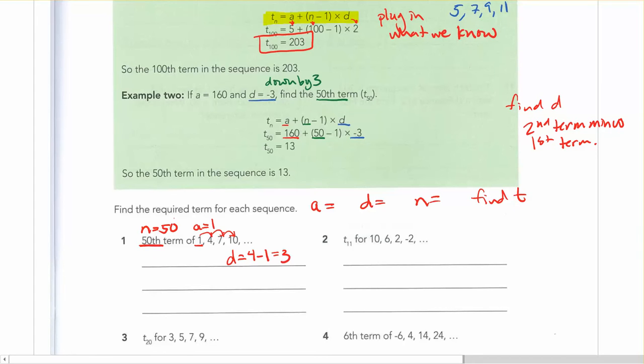So now that we've got that, the numbers that we need, the a, the n, and the d, we're going to look for the value of the 50th term. So that's why I'm going to say t of 50. So it's the 50th term. It's going to be equal to a, which is 1, plus, again I'm using this formula here.